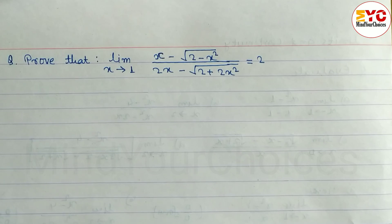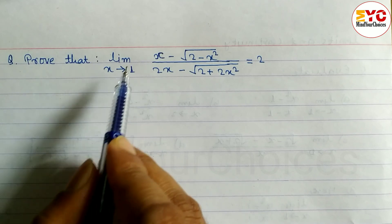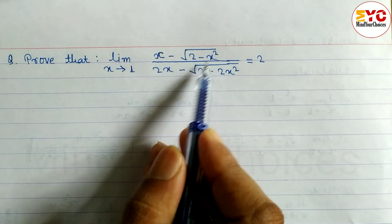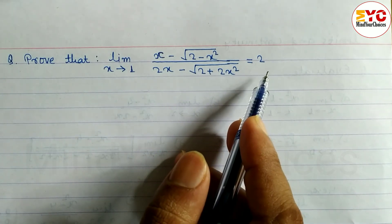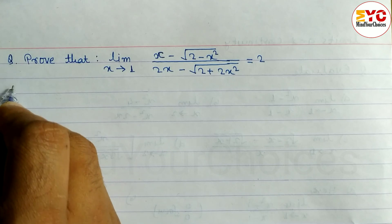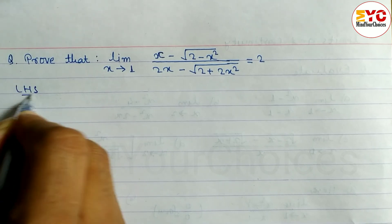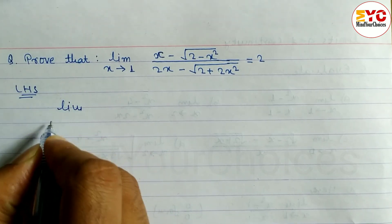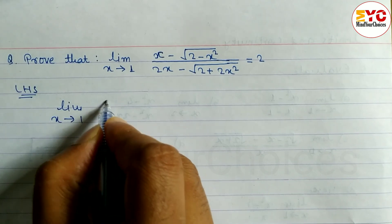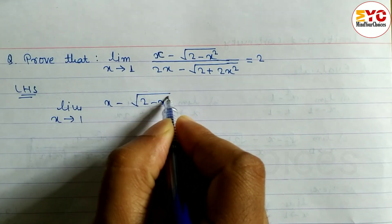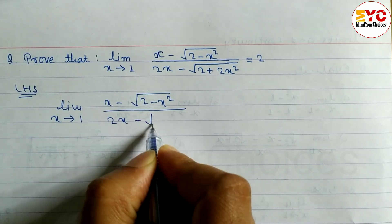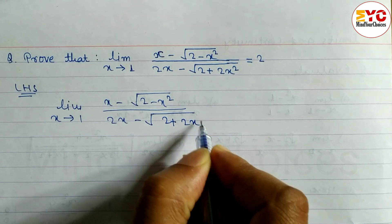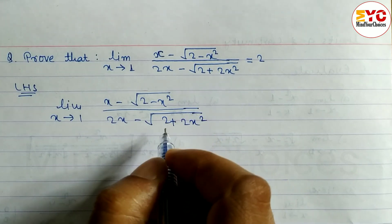Question from class 11, Limits and Continuity. We have to prove that the limit as x tends to 1 of [x minus root under (2 minus x squared)] divided by [2x minus root under (2 plus 2x squared)] is equal to 2. Let's start by taking the LHS: limit x tends to 1 of [x minus √(2 - x²)] divided by [2x minus √(2 + 2x²)].